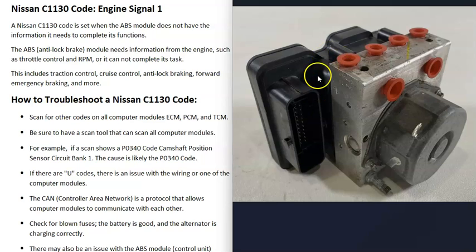It can't complete the functions that it's supposed to be doing such as the traction control or the anti-lock braking. One thing to note about this C1130 code is that many people automatically think it's the computer module when usually that's not the problem. Usually there's another problem going on with the engine or something like that that's causing the issue.